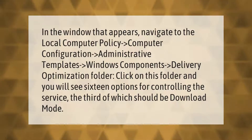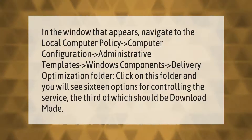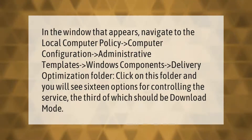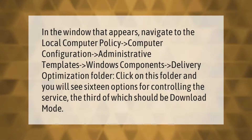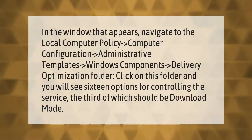In the window that appears, navigate to Local Computer Policy, then Computer Configuration, then Administrative Templates, then Windows Components, then the Delivery Optimization folder. Click on this folder and you will see 16 options for controlling the service, the third of which should be Download Mode.